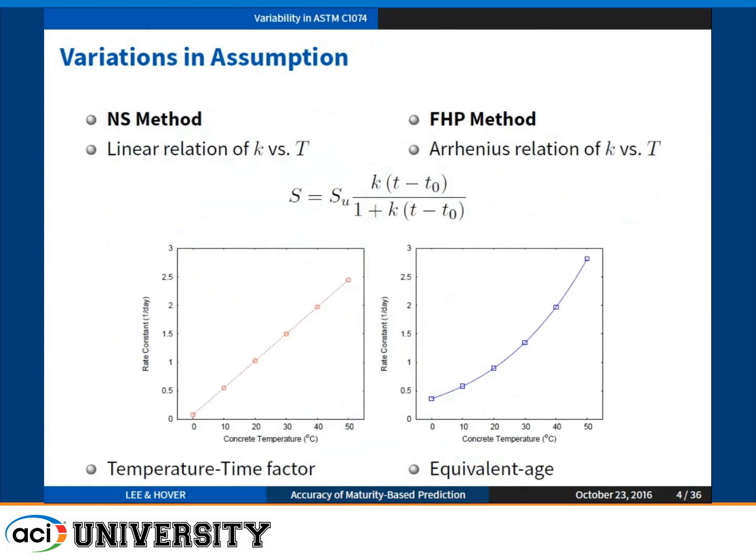Let me briefly explain the difference between the Nurse-Saul model and FHP model. Once you collect the strength-time data from multiple temperature conditions, you fit those data with a hyperbolic function to get the limiting strength SU, the rate constant K, and the strength initiation time T0. To calculate datum temperature or activation energy, you plot the rate constant K with respect to temperature, and check whether you can apply the linear model or the Arrhenius equation.